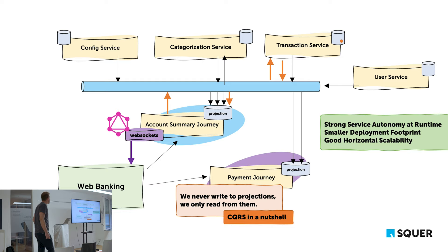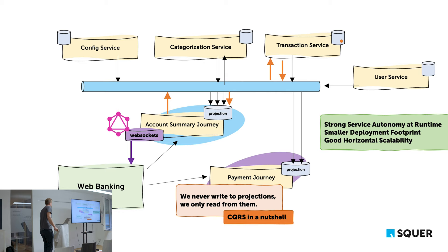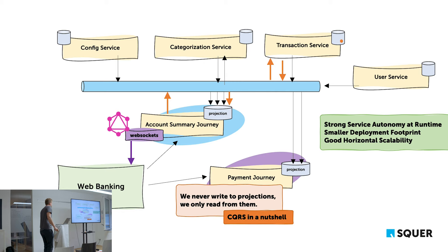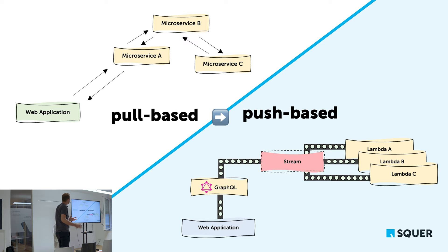We can scale a service infinitely — just start a new instance, build up a new projection from the data already in the stream, and horizontally scale forever. That's a very cool attribute from an architectural standpoint. This is what moving from pull-based to push-based architectures — what reactive systems — are fundamentally about.